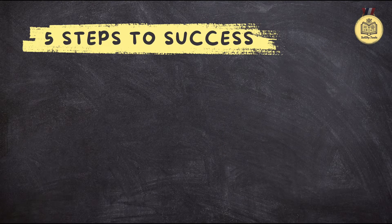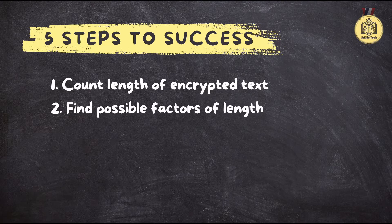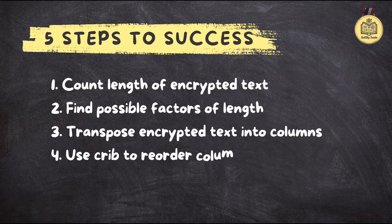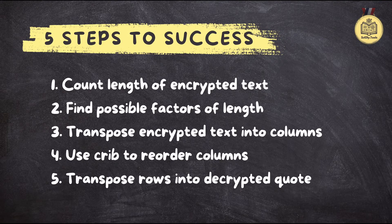Enough metaphors — let's get practical. First, you've got to count every single letter in the message. Even though it seems simple, it gives you the dimensions of the puzzle you're going to solve. Then move on to step two: find the factors — what numbers divide evenly into that letter count. Next, choose one of your potential column counts and start writing the encrypted text into columns based on that number. Then comes the exciting part: look for your crib. Scan the rows to see if those crib letters are all together. It's like trying different keys to unlock a treasure chest. If they're spread across rows, you've got to go back and pick a different factor — trial and error until you find the right match.